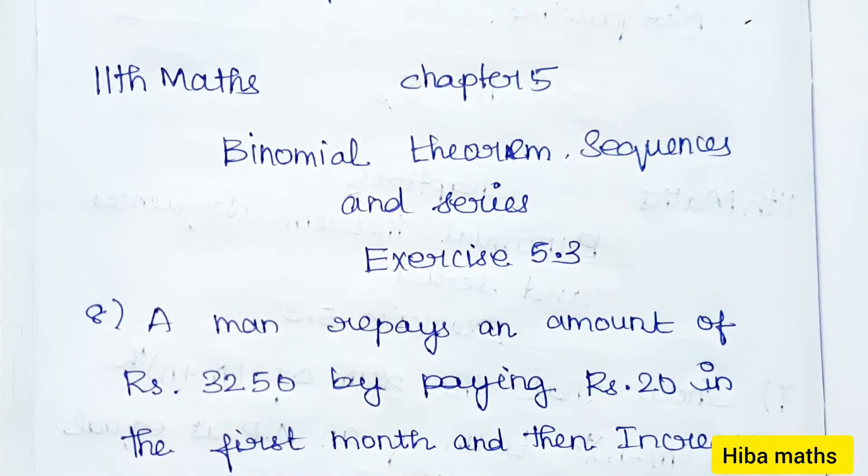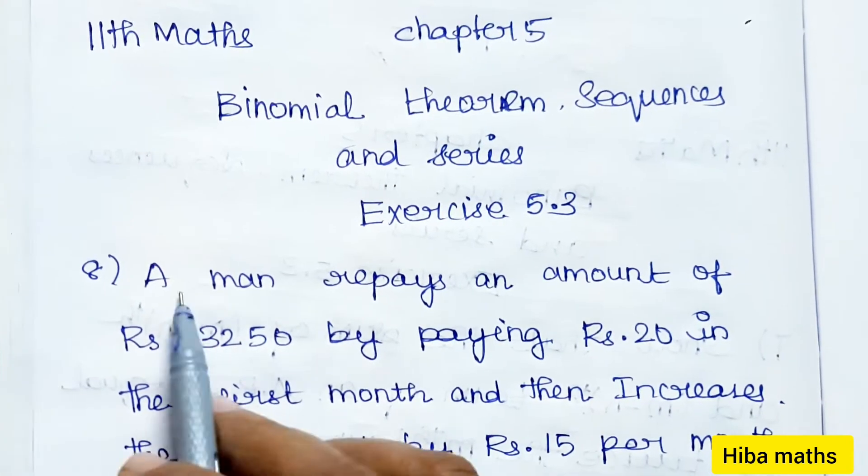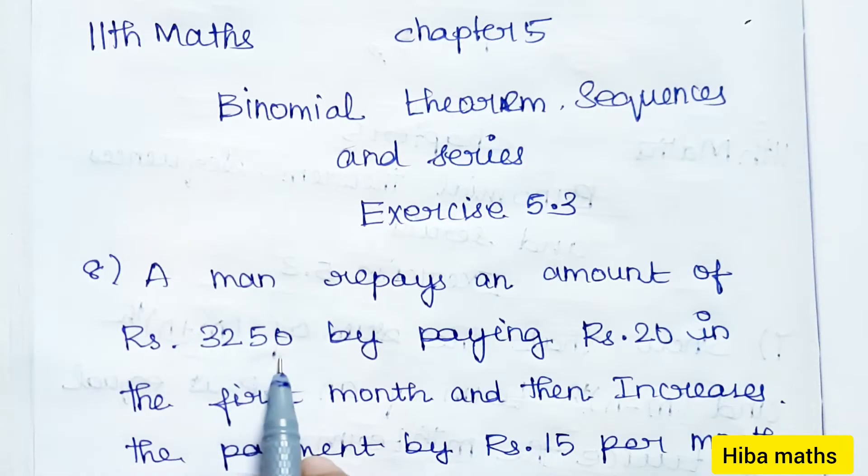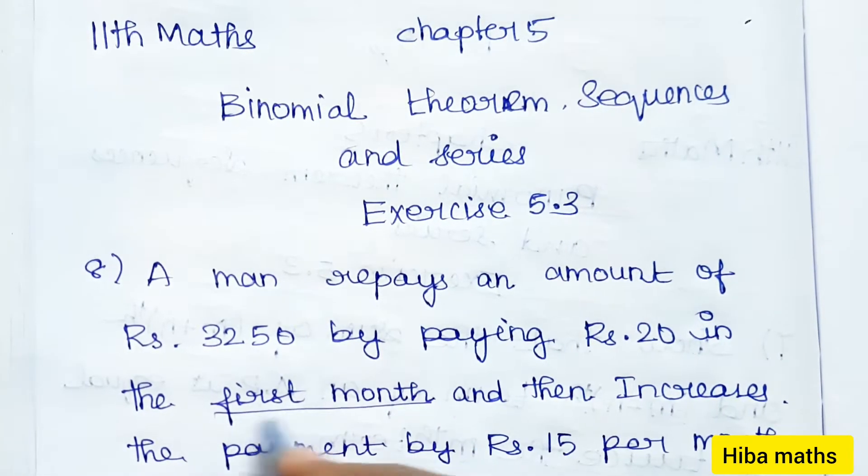Hello students, welcome to Hiba Maths. 11th standard maths, chapter 5: Binomial theorem, sequences and series, exercise 5.3, question 8. A man repays an amount of rupees 3250 by paying rupees 20 in the first month.